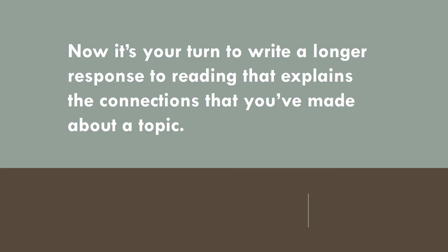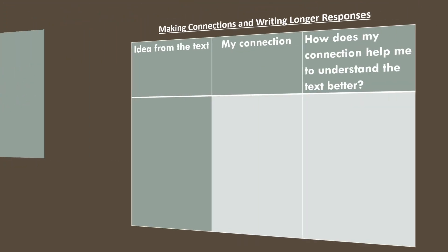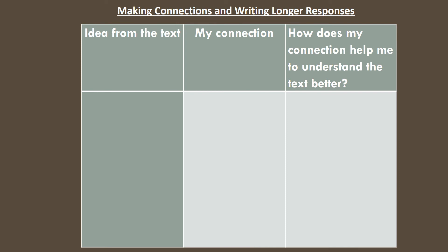Now it's your turn to write a longer response to reading that explains the connections that you've made about a topic. Don't forget to use your making connections and writing longer response chart that's provided. Write the idea from the text that you're going to make your connection to, then tell your connection in the 'my connection' section, and then answer the question: how does my connection help me to understand the text better?